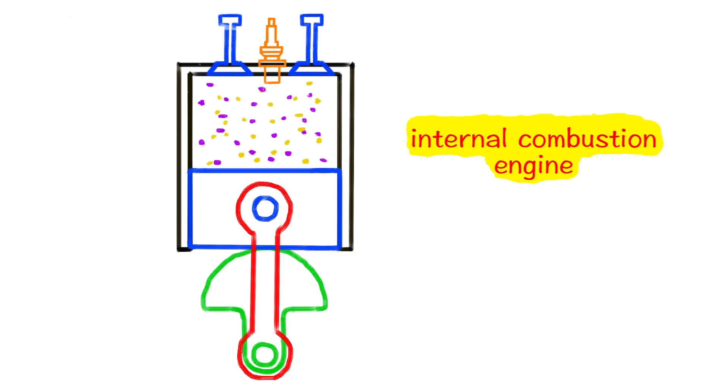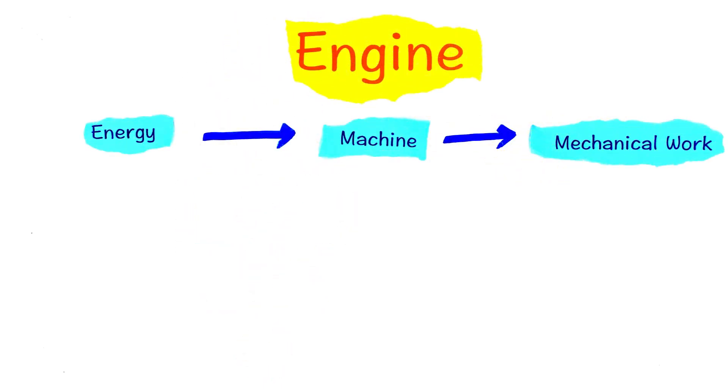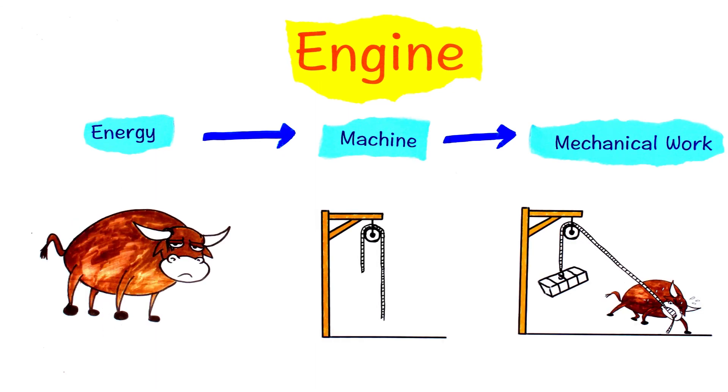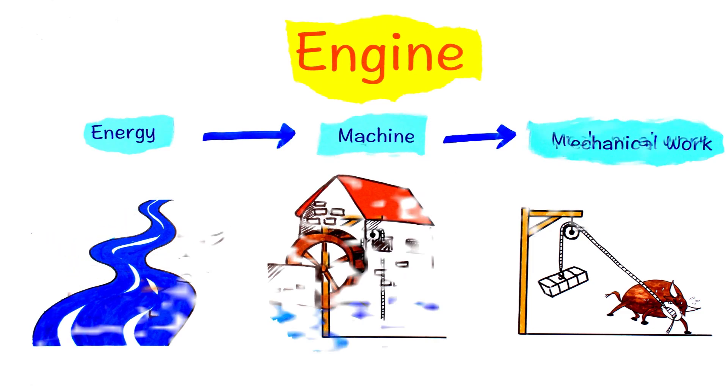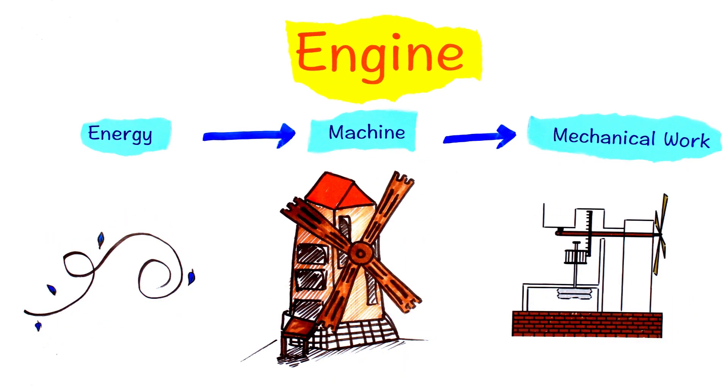Before we finish, let's recap real quick. We defined the engine as a machine that takes in energy to produce some mechanical work. We have seen that throughout the history of mankind, we have used different types of energy sources to do work for us. We started by using human power, then animal power, then we learned how to use water energy and wind energy to power our machines.